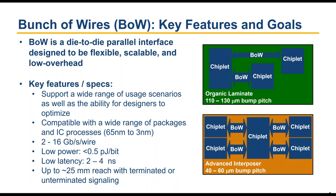BOW is compatible with a wide range of packages and process technologies, including organic laminates as well as advanced interposers. As of today, BOW is the only openly developed interface standard that actually supports organic laminates. BOW supports many different modes, ranging from about 2 to 16 gigabits per second per wire — these are single-ended interfaces.